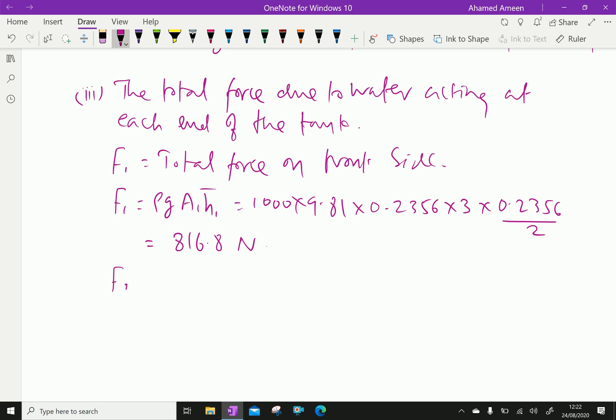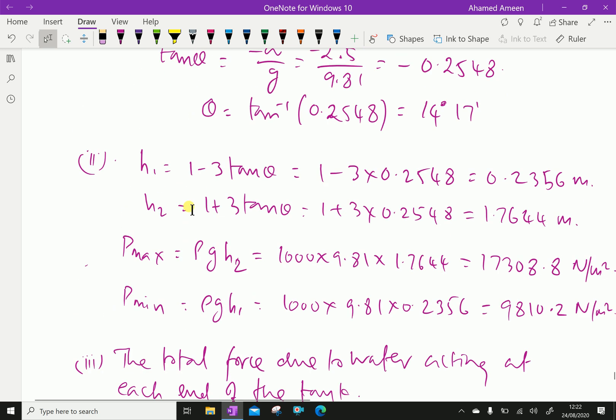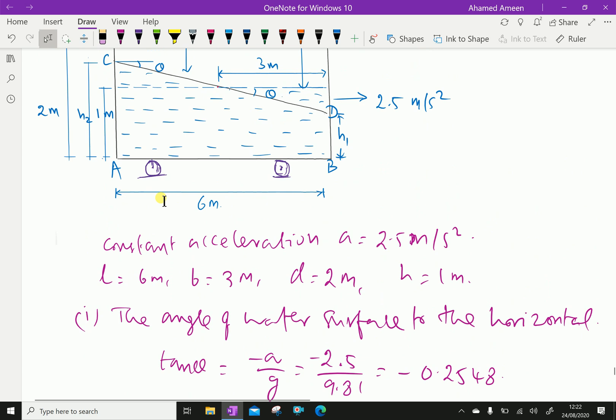Then F2 equals rho g A2 h2 bar. Here, rho is 1000, g is 9.81, A2 is the rear side area: h2 times width.